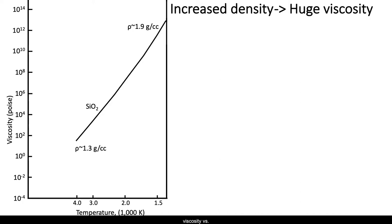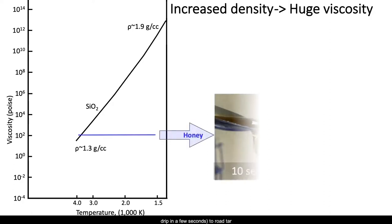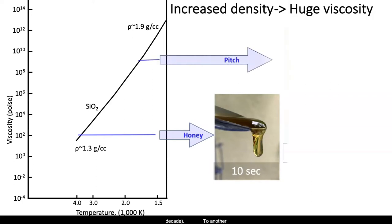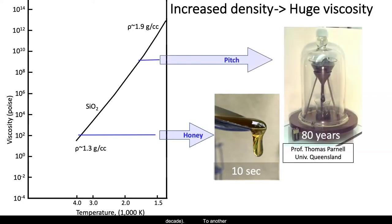I show here a log-log plot of viscosity versus one over T for molten silica, with its density noted at the ends. You can see that over a factor of three in temperature, silica's density varies by 30%, but its viscosity varies by 10 trillion — that is, from the thickness of honey, a drip in a few seconds, to that of road tar, a drip in a decade, to another factor of 10,000 times more rigid, where it's defined as a solid at 10 to the 13th poise.